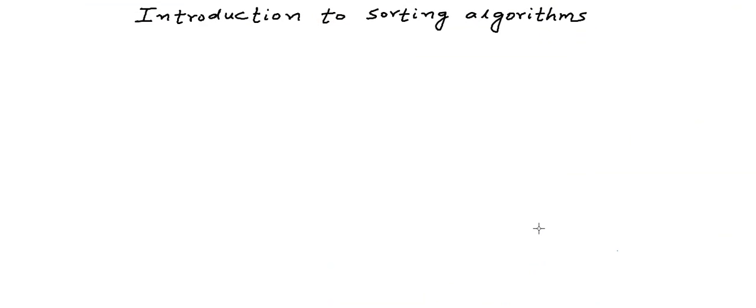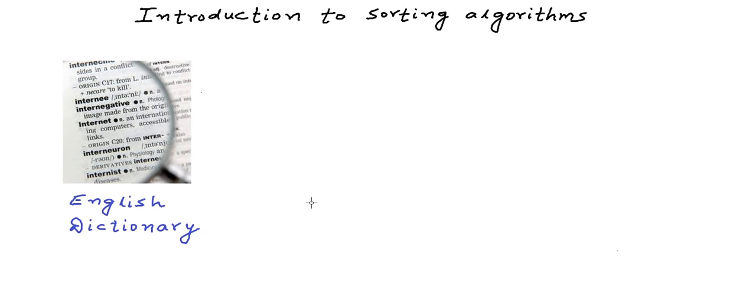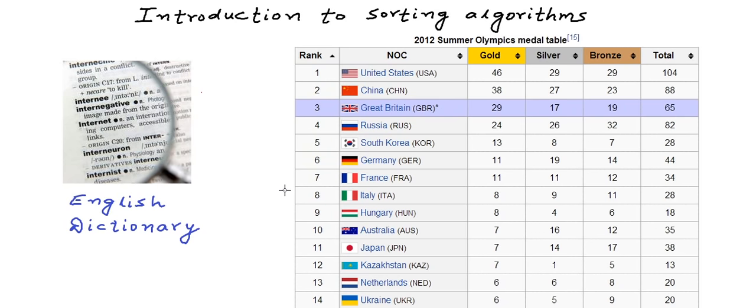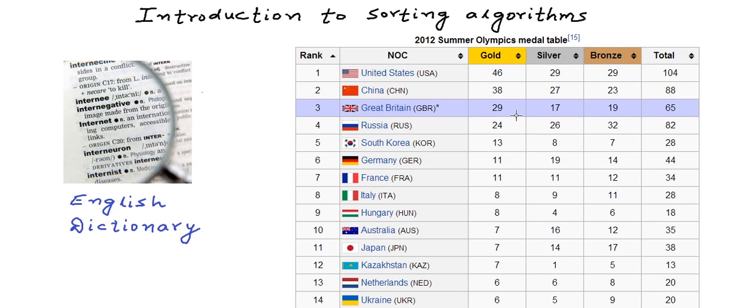And there are so many places where we like to keep our data sorted, be it a language dictionary where we want to keep the words sorted so that searching a word in the dictionary is easy, or something like a medal tally where we want to see which team is at the top and which team is not performing so well.